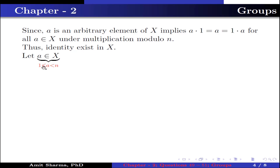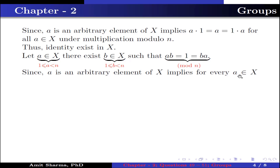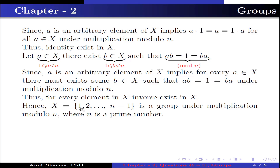Let a belong to X, where 1 ≤ a < n. There exists b in X, where 1 ≤ b < n, such that ab = 1 = ba under multiplication modulo n. Since a is an arbitrary element of X, this implies for every a in X there exists some b in X such that ab = 1 = ba under multiplication modulo n. Thus for every element in X, an inverse exists in X. Hence X = {1, 2, …, n-1} is a group under multiplication modulo n, where n is a prime number.